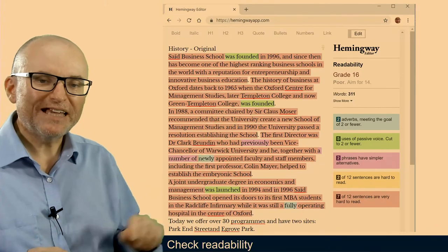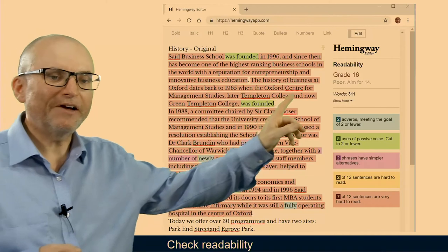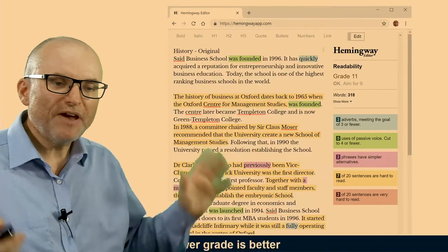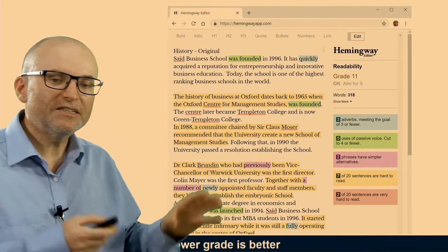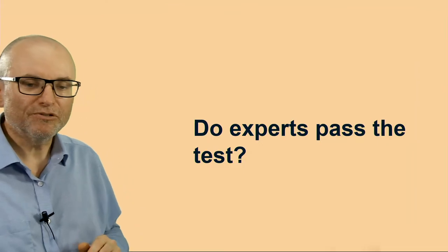If we look at that history page that we've looked at in previous videos, that doesn't have very high readability. It gets grade 16. All the sentences are very long. So just with a very few simple things by shortening the sentences and paragraphs, we can get to grade 11, which is much easier to read.